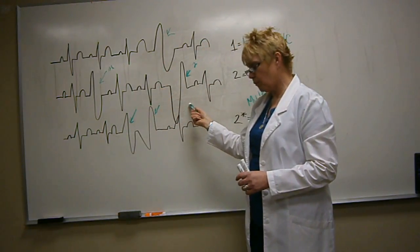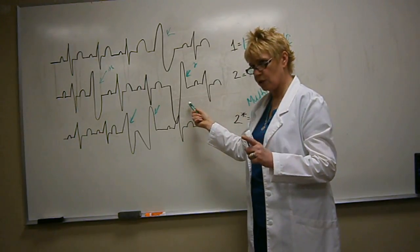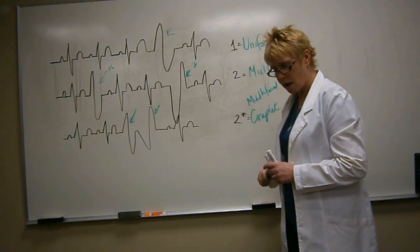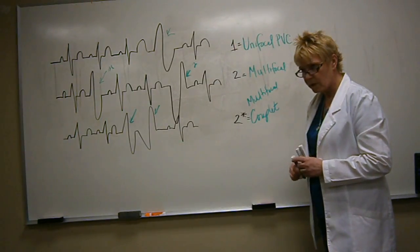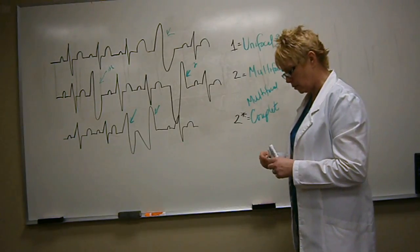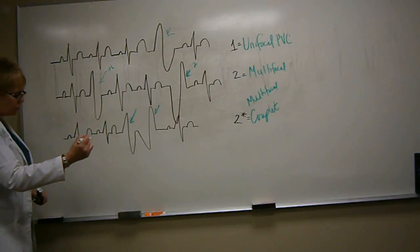When you have unifocal PVCs in isolation, it should increase your awareness on that rhythm. But when you have side by side a couplet of multifocal, it is significantly worse, and it should really elevate your level of suspicion. Because, as soon as you have another source of irritation, you can have a sinus rhythm, and then this can happen.